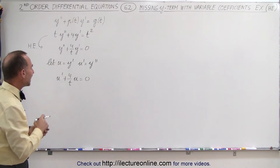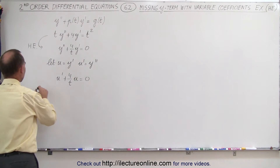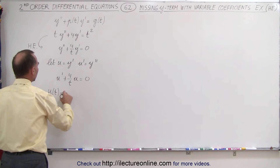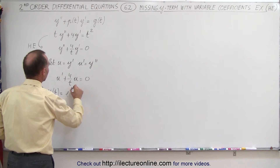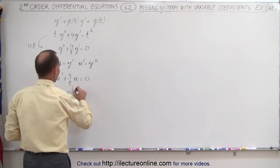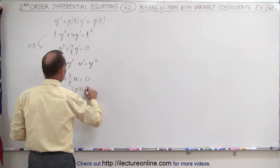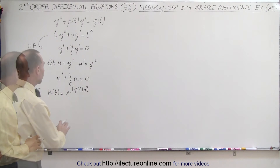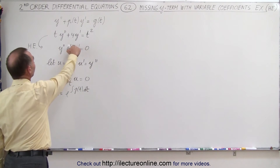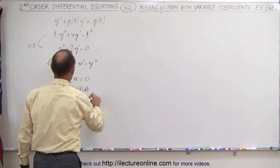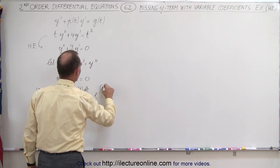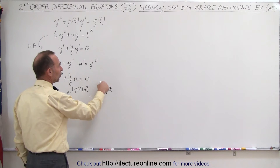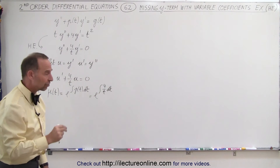Now the next step is we're trying to find the integrating factor. The integrating factor, which is what we call mu of t, is equal to e to the integral of p of t dt. That's known as the integrating factor that we use to solve differential equations with. Which means that p of t in this case is going to be 4 over t, so this is going to be equal to e to the integral of 4 over t dt. The 4 can come outside the integral sign, and 1 over t dt integrates to the natural log of t.